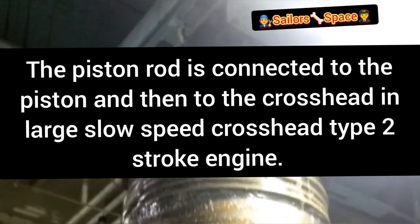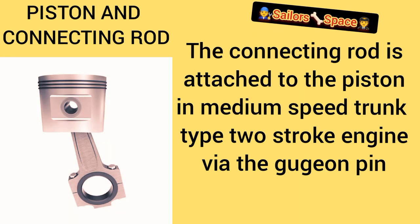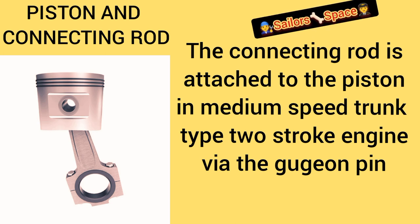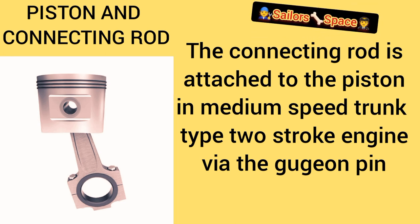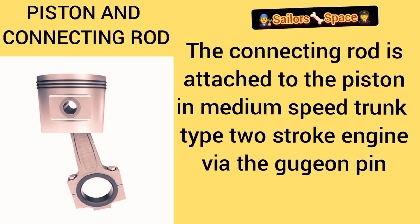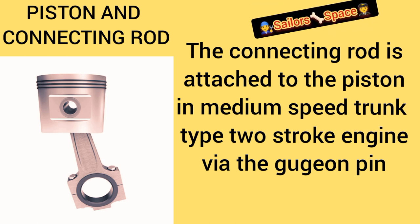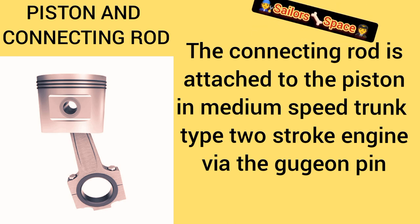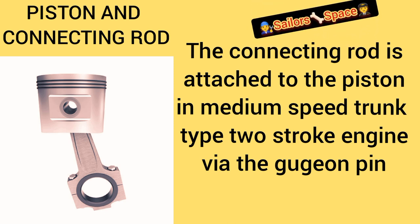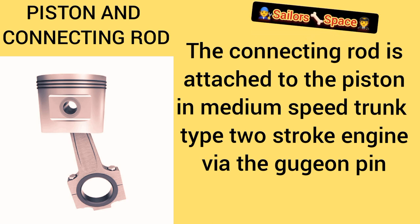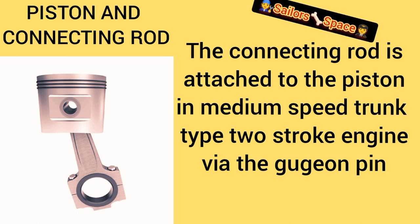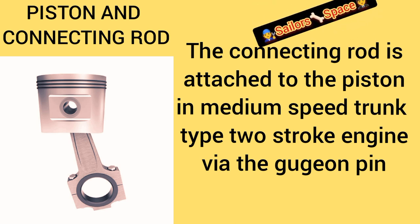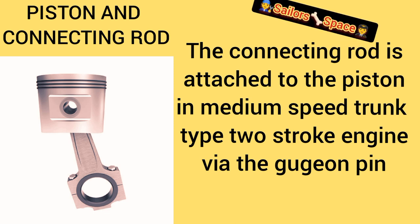For the second type — the medium-speed trunk-type engine — that is a simpler design used for smaller applications like motorbikes and smaller engines. In the medium-speed trunk-type engine there is no piston rod because the engines are not so giant. We have the piston connected directly to the connecting rod and then to the crankshaft. The connecting rod is what links the piston to the crankshaft in both engine types.